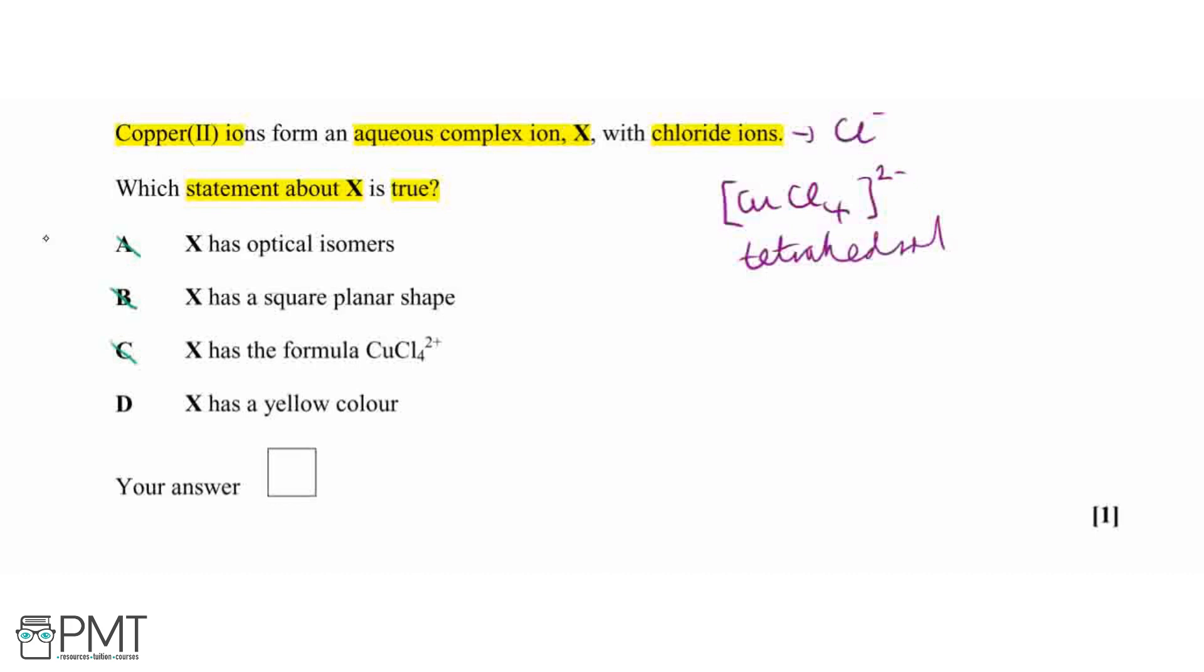Therefore, our answer is going to be D, that X has a yellow colour, and this is also something which you need to learn as part of this complex ion, so our answer is D.